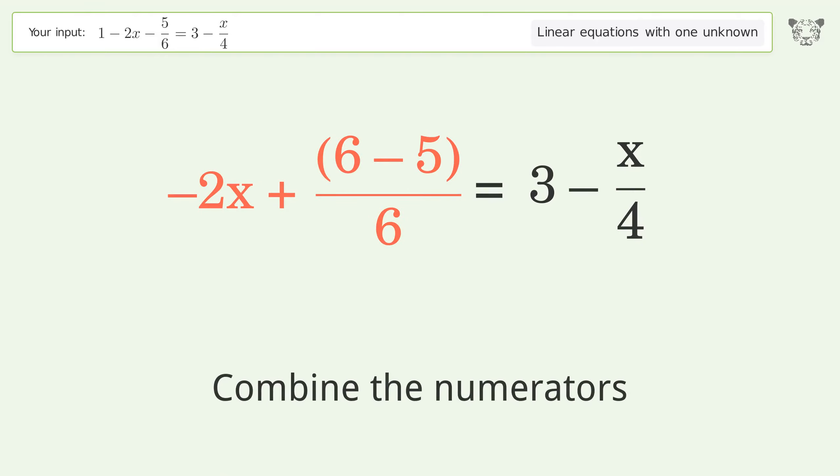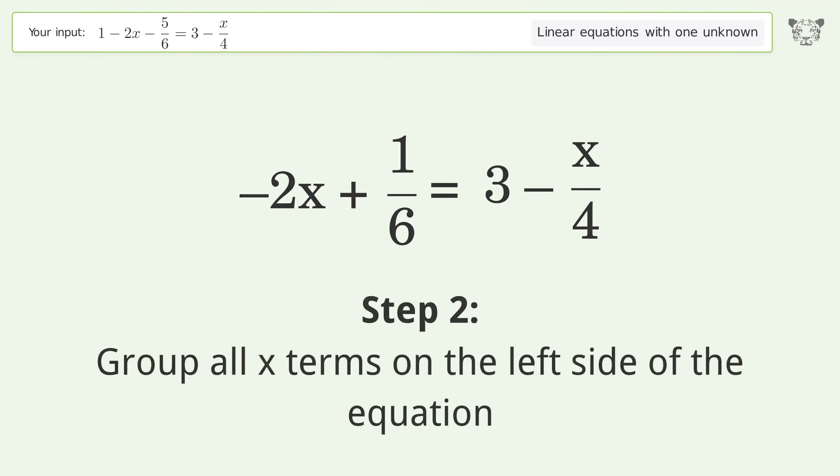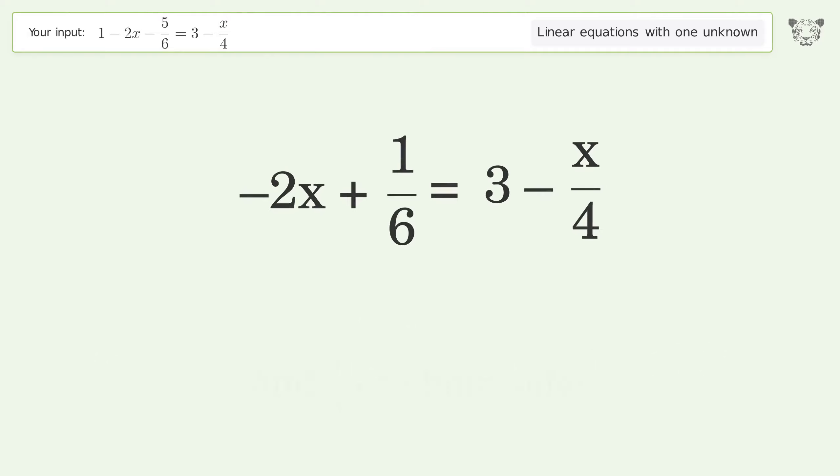Combine the numerators. Group all x terms on the left side of the equation. Add 1 over 4x to both sides.